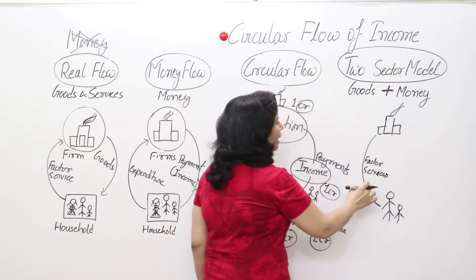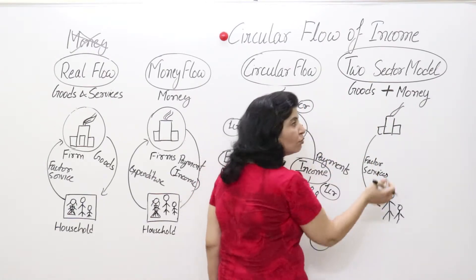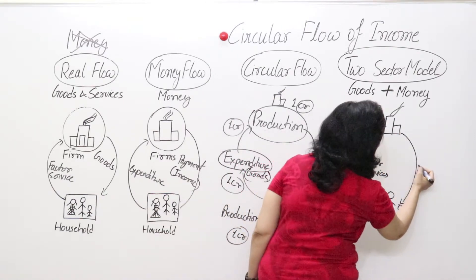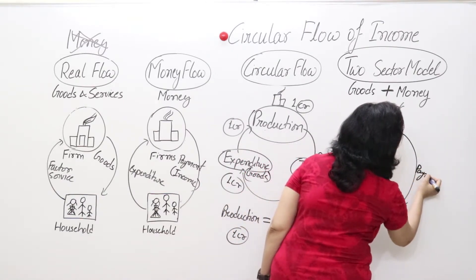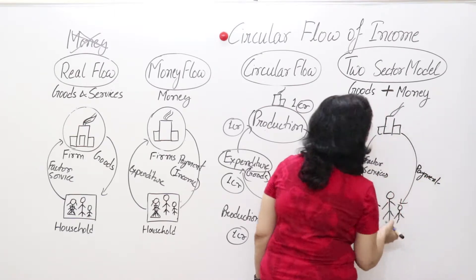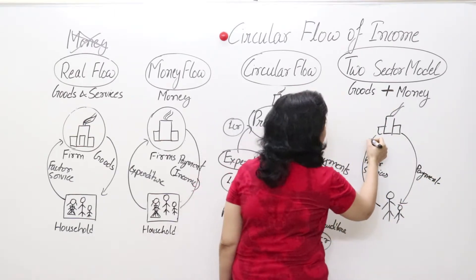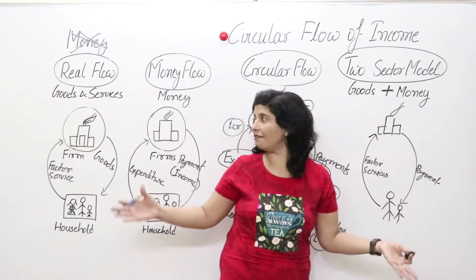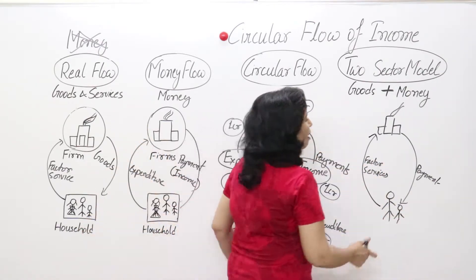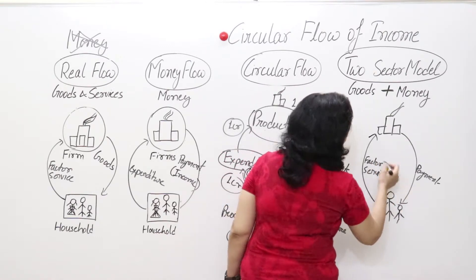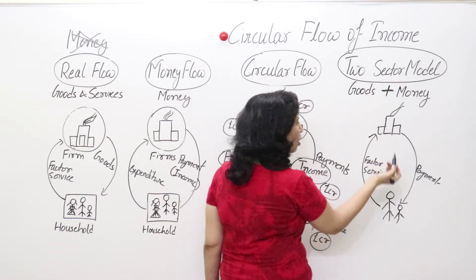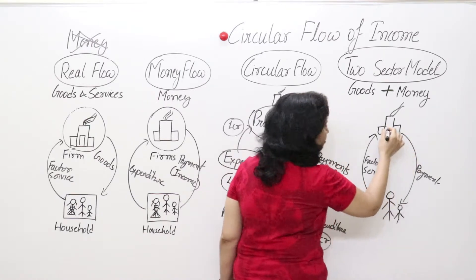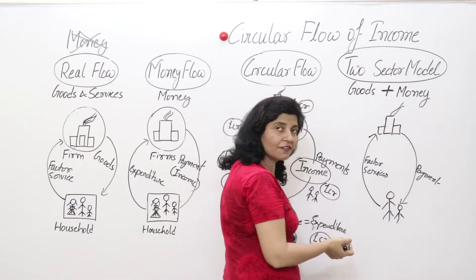Firms, in lieu of factor services, give payments to households. This is the money flow. We can also draw the real flow: in lieu of work, households purchase goods and services from firms. So households receive payments and goods and services in physical form from firms.